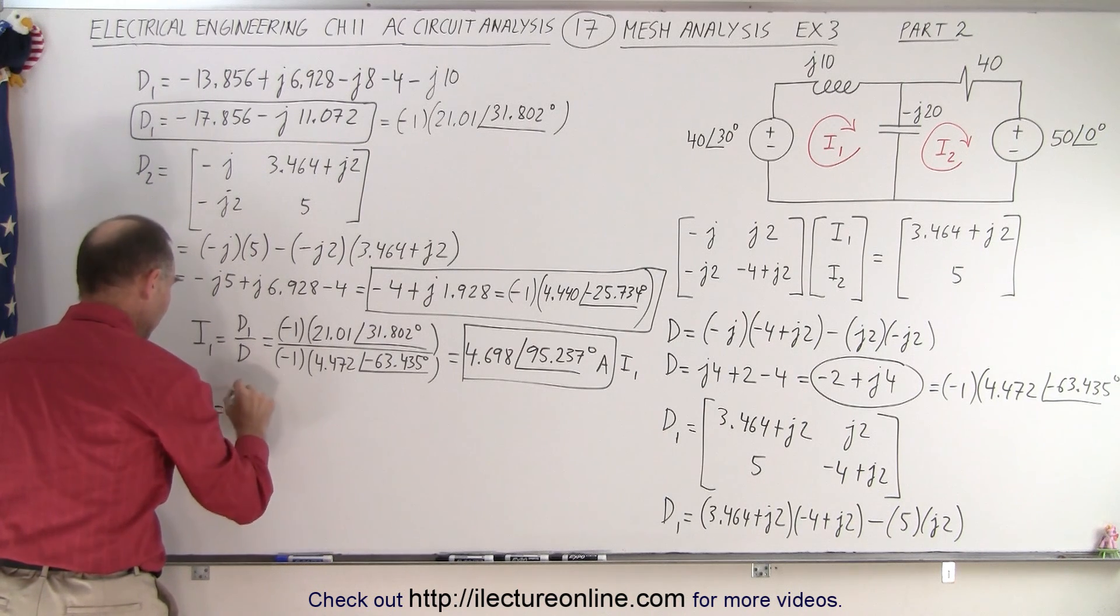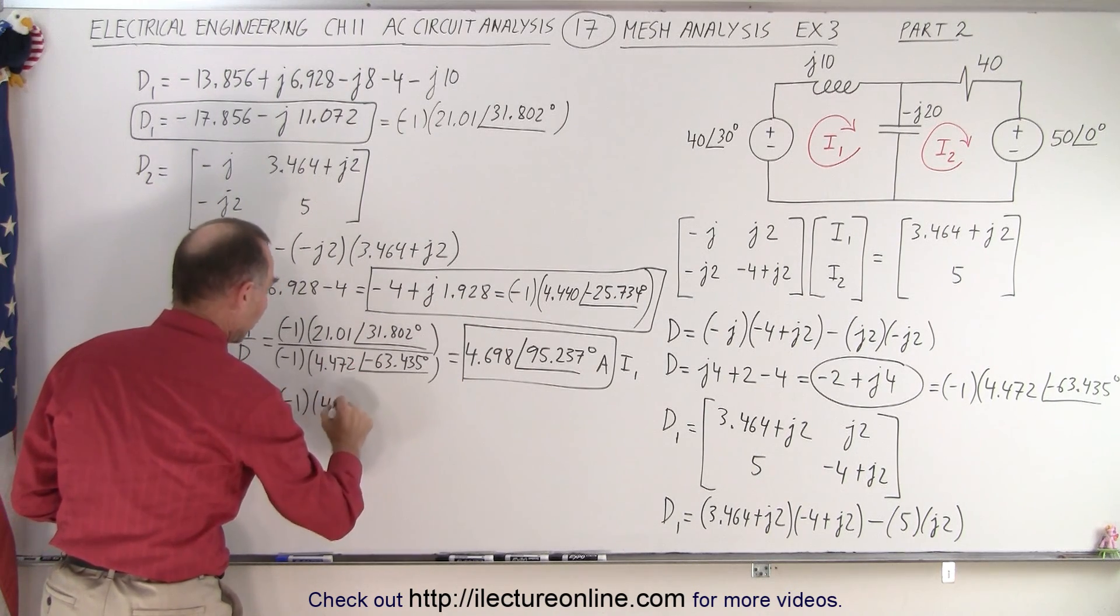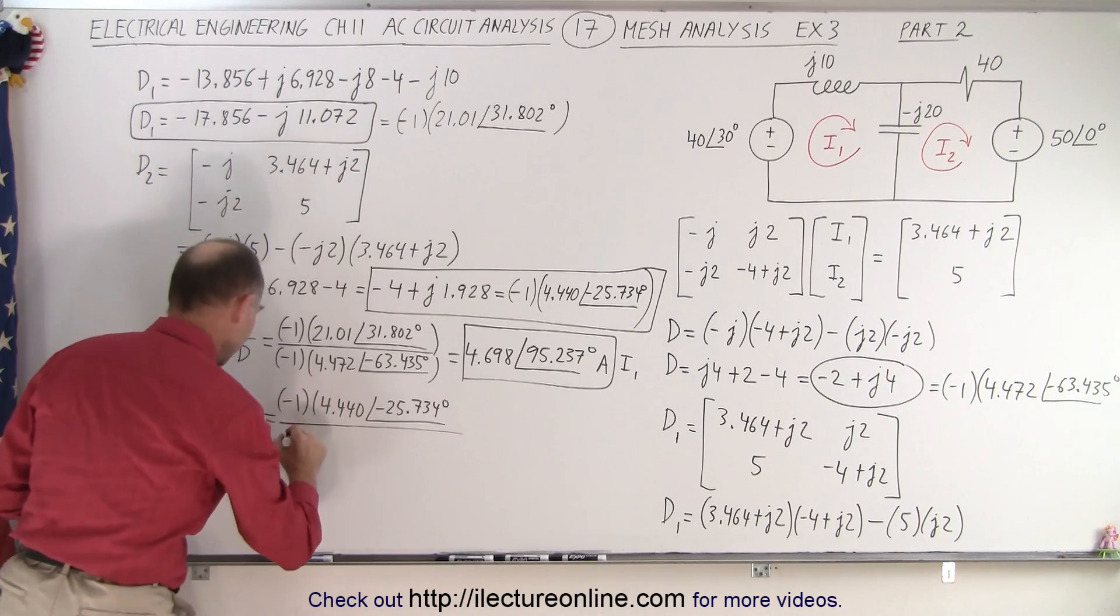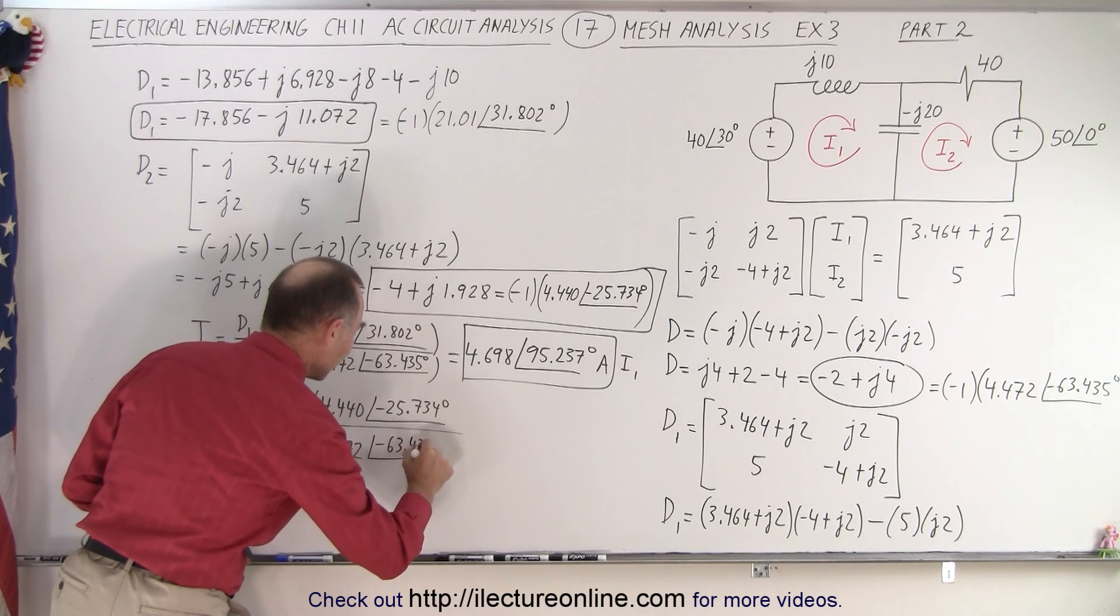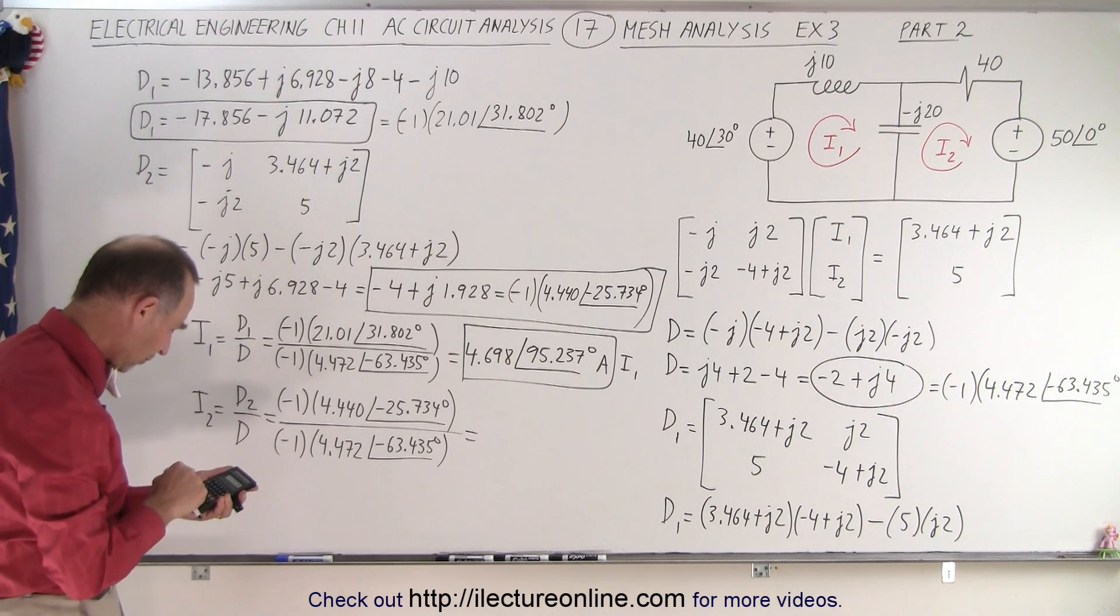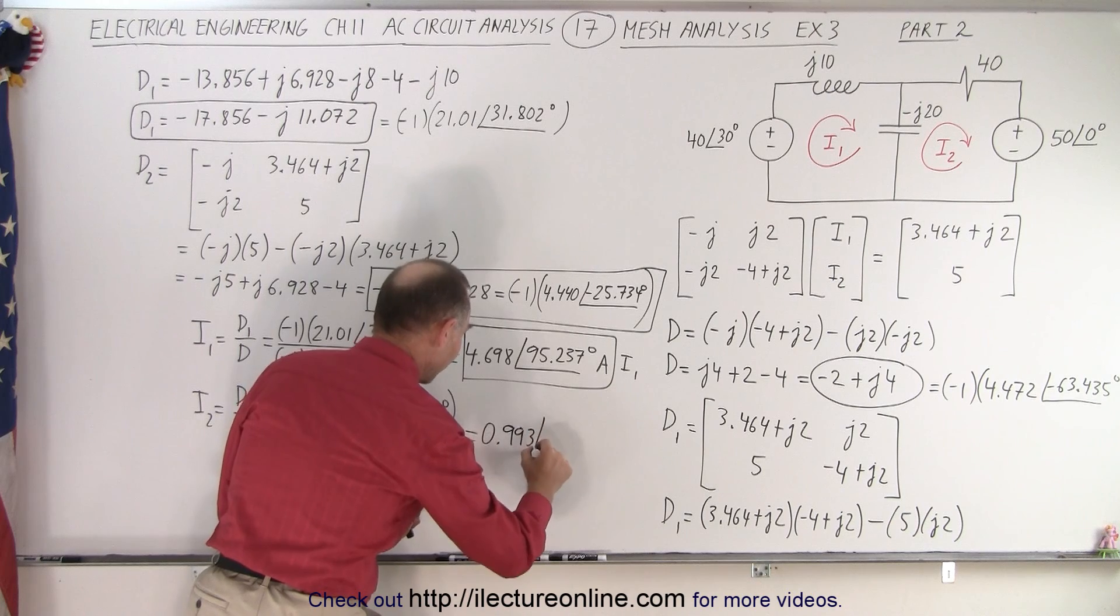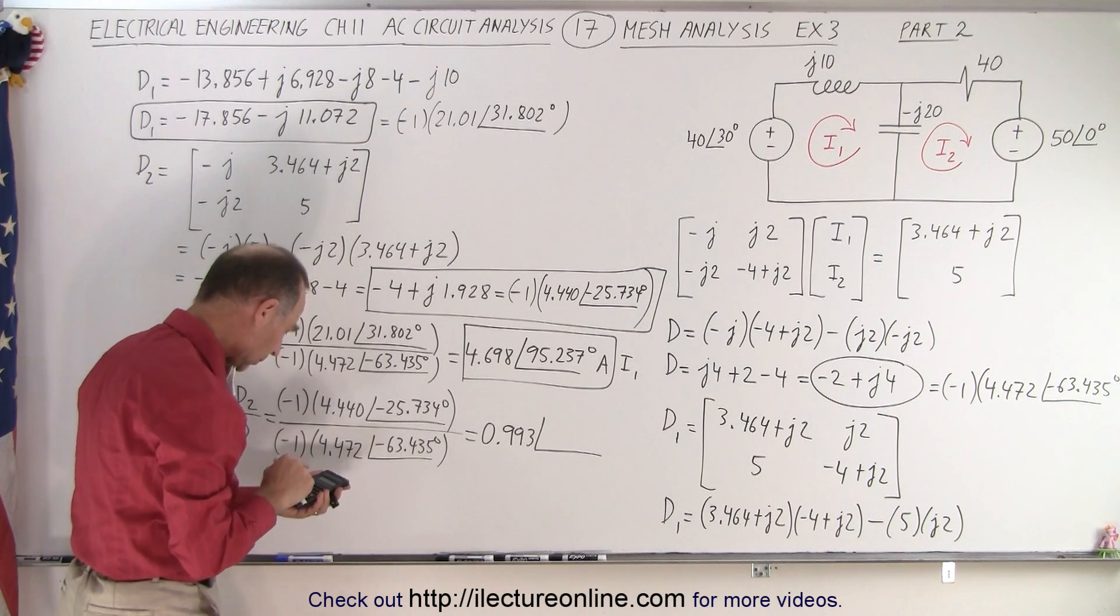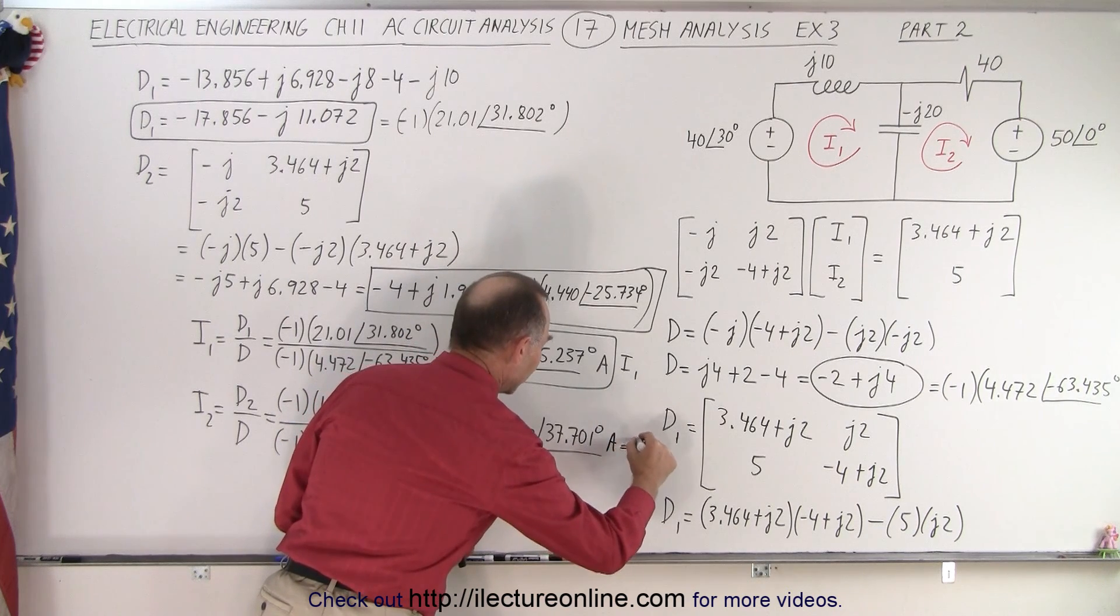Then I2, that's equal to D2 over D. Now D2 we have right here, that's negative 1 times 4.440 with a phase angle of minus 25.734 degrees. And we divide that by negative 1 times 4.472 with a phase angle of minus 63.435 degrees. Alright, the negatives cancel out, we have 4.440 divided by 4.472, that is 0.993 with a phase angle of 63.435 minus 25.734 equals, and that becomes a positive 37.701 degrees, because that's in amps, and that equals I2.